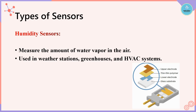Applications of humidity sensors include weather stations for measuring atmospheric humidity to predict weather patterns; HVAC systems to maintain comfortable indoor air quality by monitoring and controlling humidity levels, preventing mold growth and improving energy efficiency; manufacturing processes such as food processing and textiles to maintain product quality; and smart home devices like smart thermostats and indoor air quality monitors.